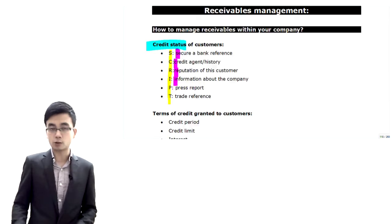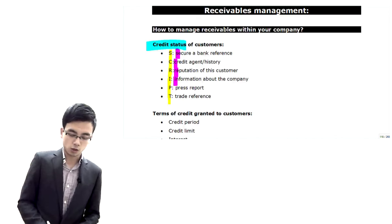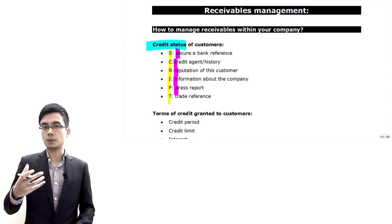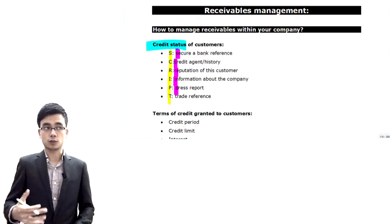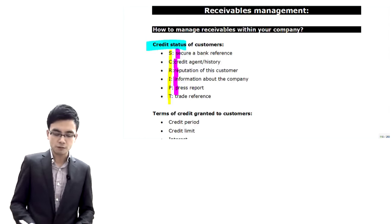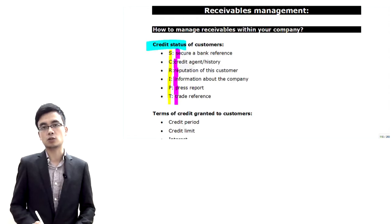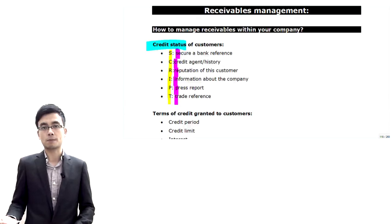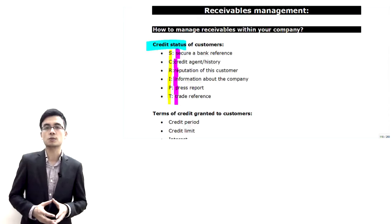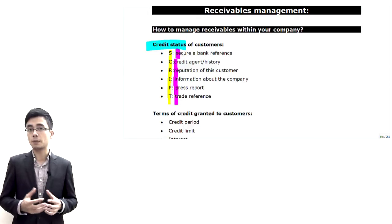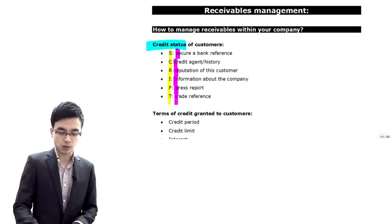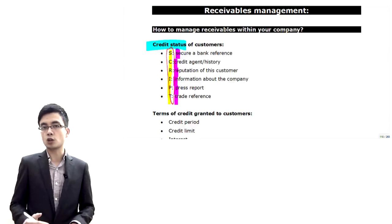We can look at information inside the company — checking their website to obtain necessary information. We can also look at press reports — newspapers — to see if any adverse events have damaged their reputation, such as defaulting on payments. Finally, we look at trade references — with the client's permission, we check whether previous dealers were happy with the customer. If the customer has defaulted on payments previously, we may not do business with them. That is the SCRIPT mnemonic for checking credit status.